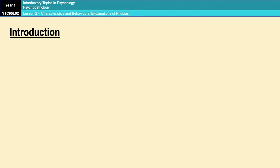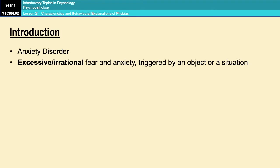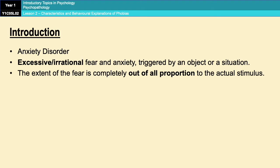Phobias come under the category of anxiety disorders. They are anxiety disorders characterised by an excessive or irrational fear, or excessive and irrational anxiety, triggered by an object or a situation. What makes a phobia a phobia is that the fear being experienced is completely out of all proportion to the actual stimulus, and it leads to conscious and active avoidance of the stimulus or of a situation where the stimulus might be encountered.